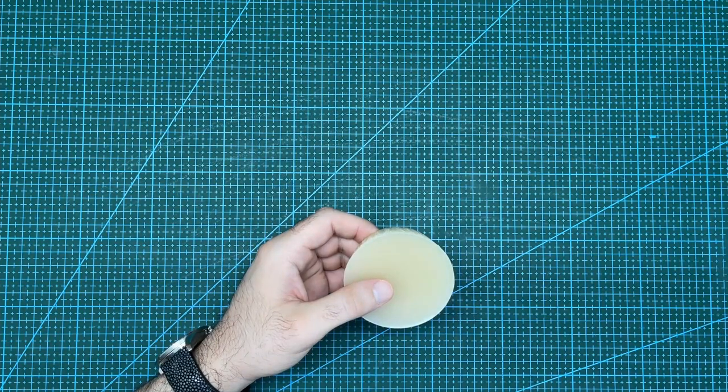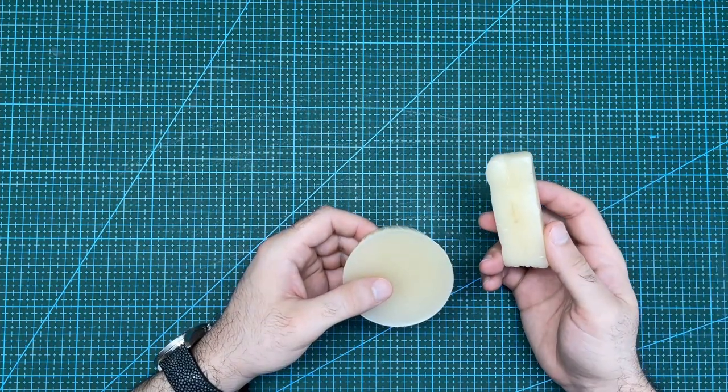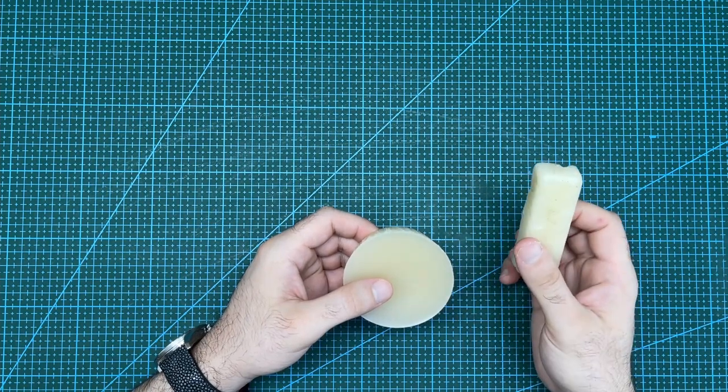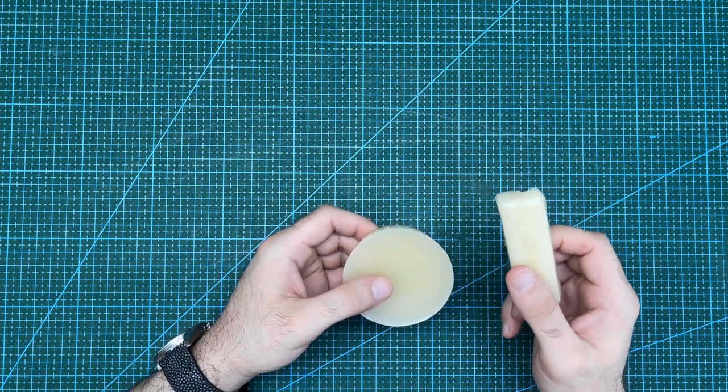However, when it comes to waxing thread for stitching, 100% beeswax is still the best option, as it will make the thread sticky and help lock the thread within the stitching holes.